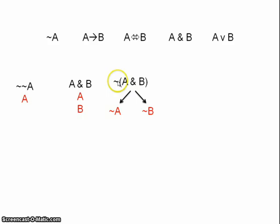On one branch we assume not A, on the other branch we assume not B, and these branches are now independent. So, if you see a negated conjunction, that's what you do. You split the tree, have two branches.